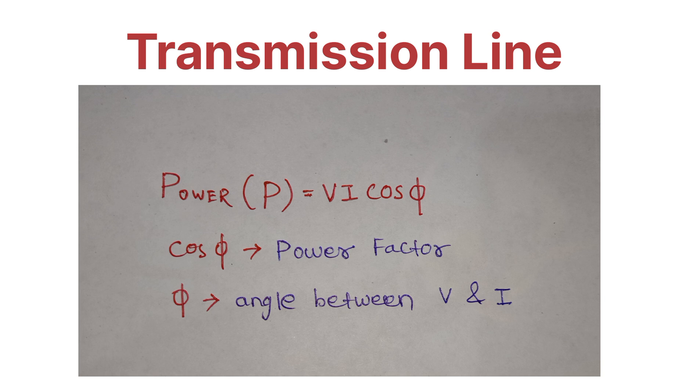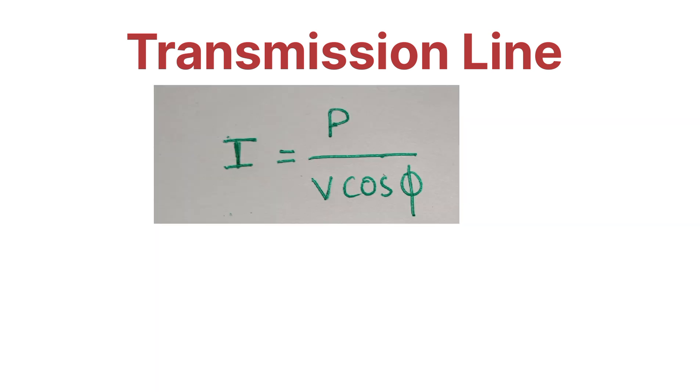From this, we get that I will be equal to P divided by V cos φ.